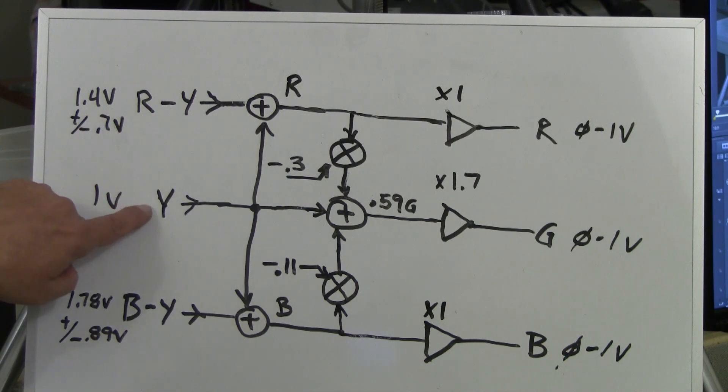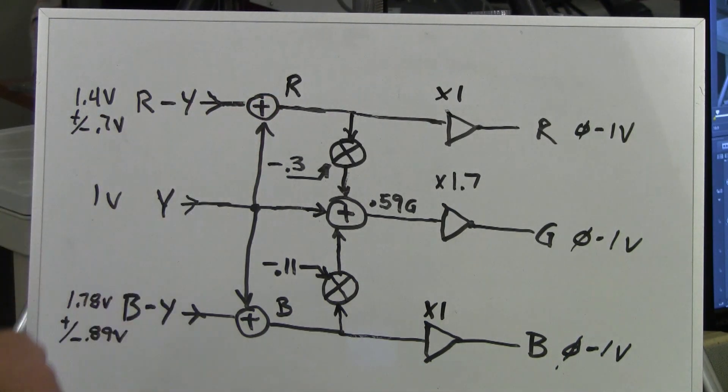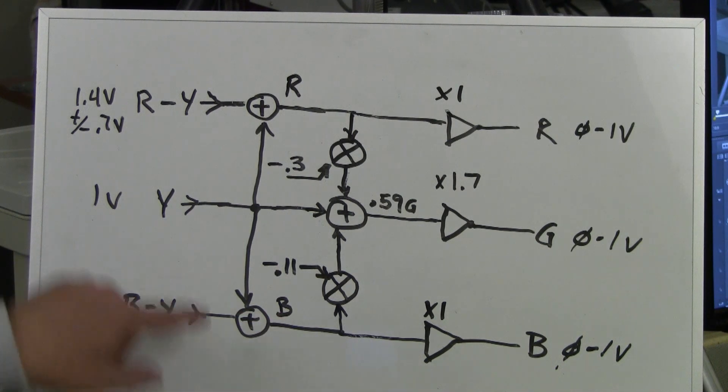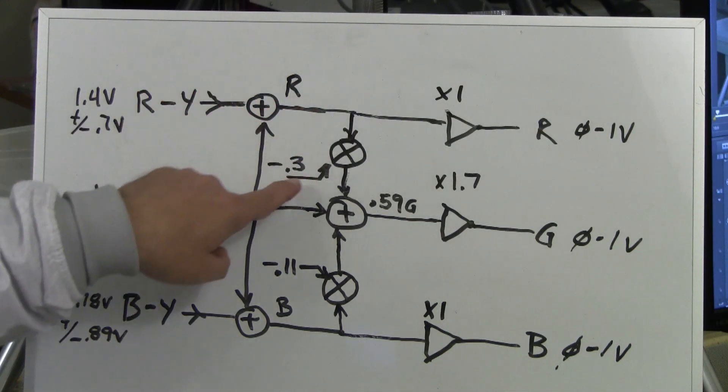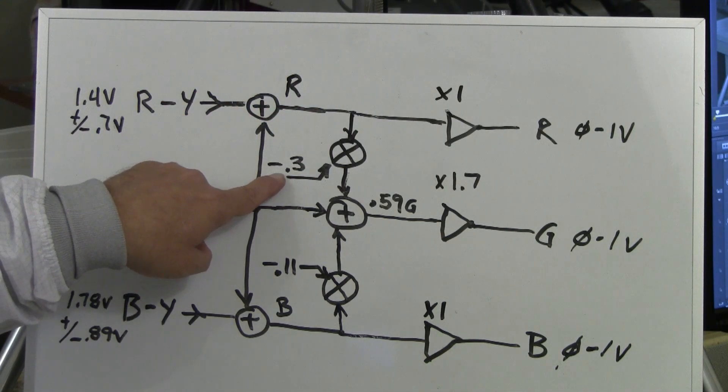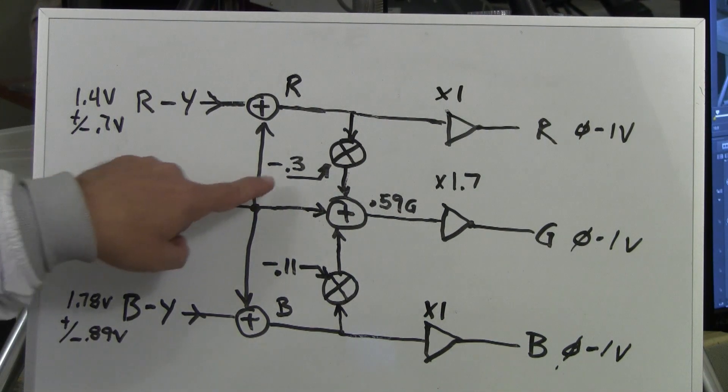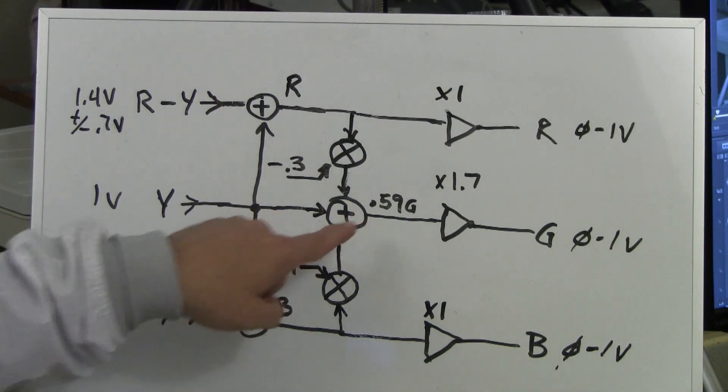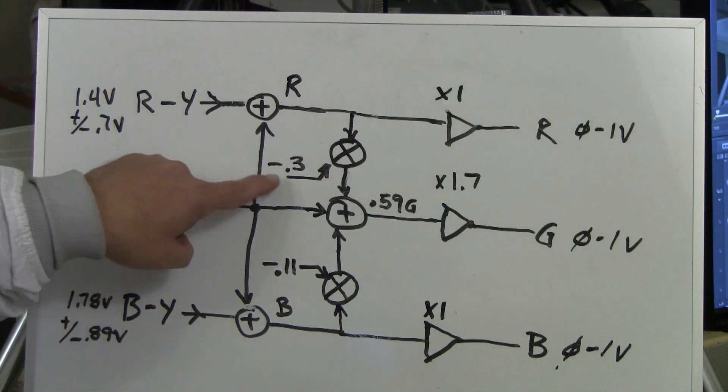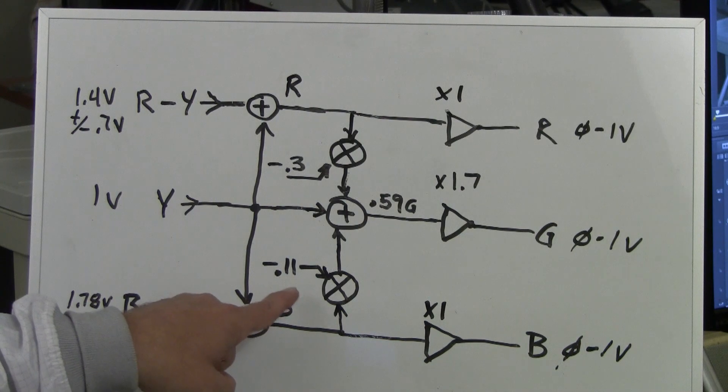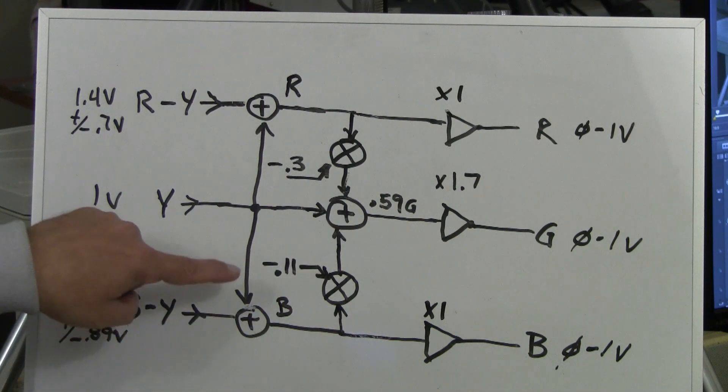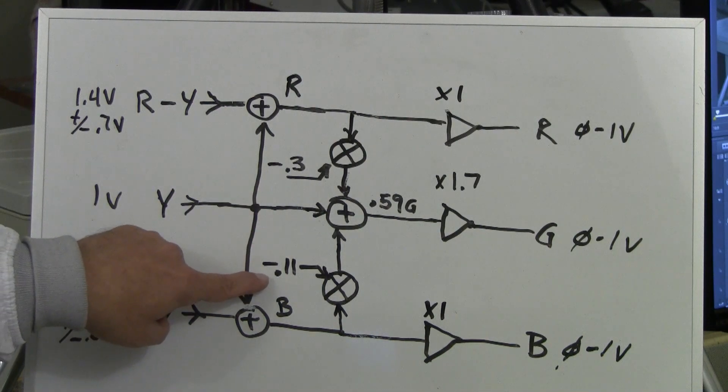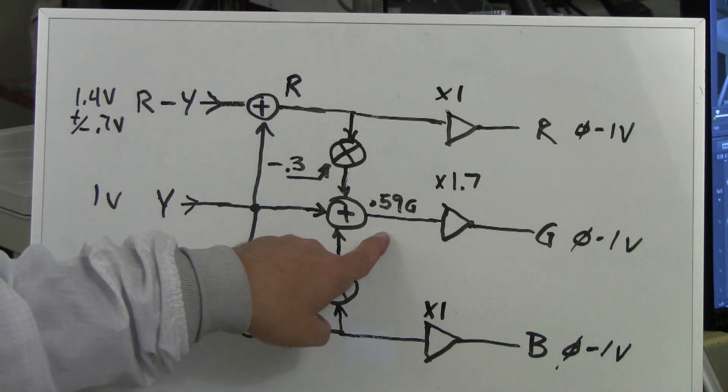Algebraically, the minus Y and the plus Y cancel, leaving us with just R or red. The same thing happens with B minus Y. We add the Y to the B minus Y. The Y's cancel. We're left with blue. We then take the red signal and we multiply it times minus 0.3. Remember to make Y, we added 0.3 red to 0.11 blue and 0.59 green. So now we need to take out the 0.3 red from the Y signal, take out the 0.11 blue from the Y signal, and we do that by inverting them and scaling them so that we're left with just the 0.59 green.